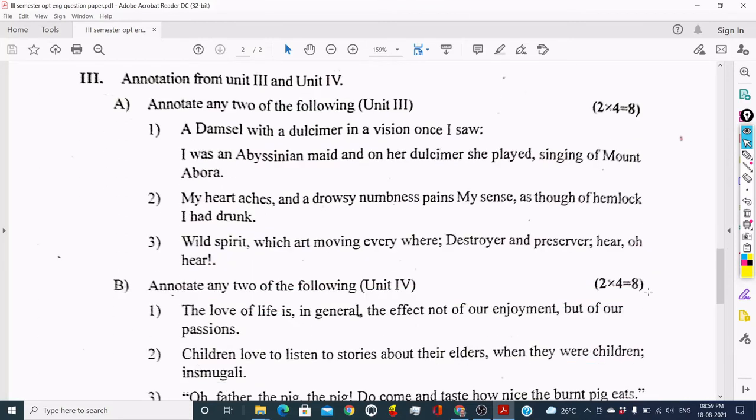Now we shall come to the third main question. The third main question has two parts, A and B. You have to annotate some lines. Part A is from Unit 3, which means Poems. There are three sub-questions here. You have to annotate any two lines.